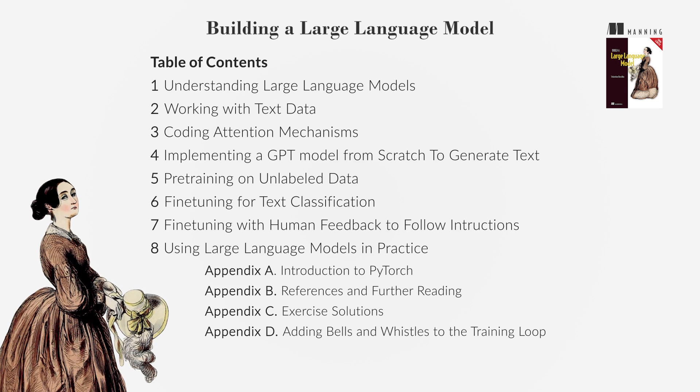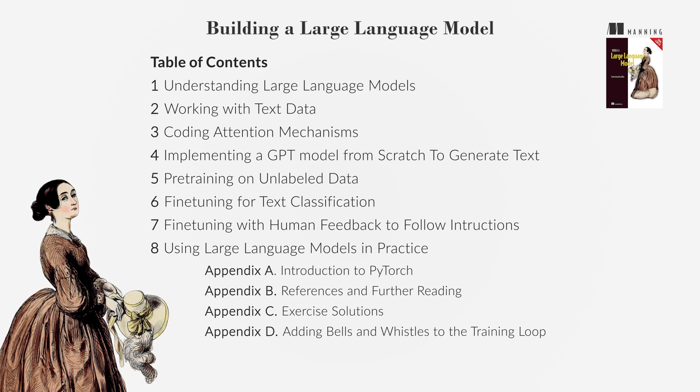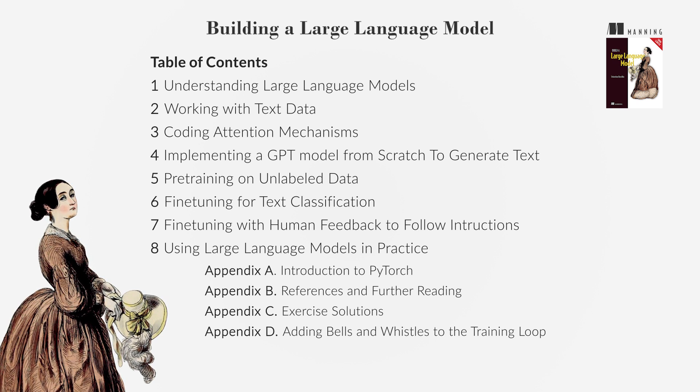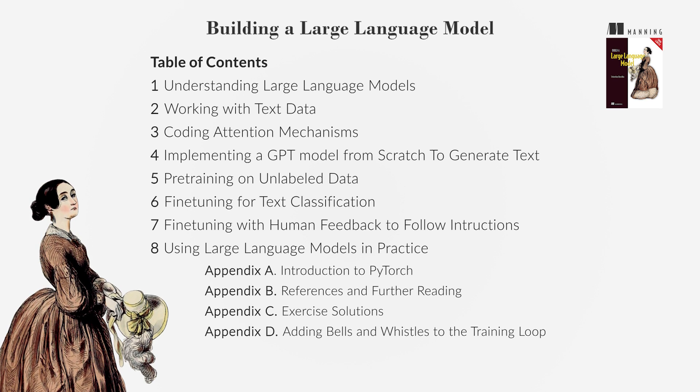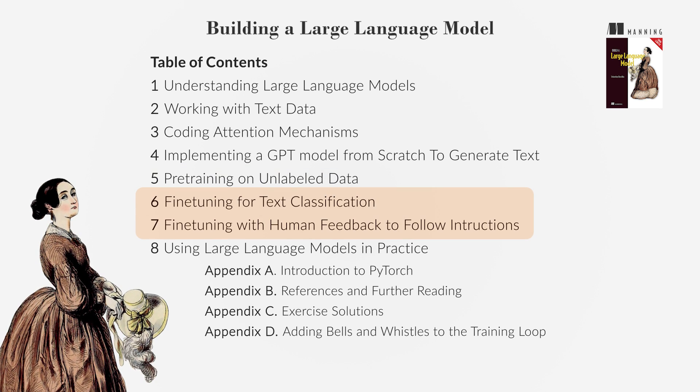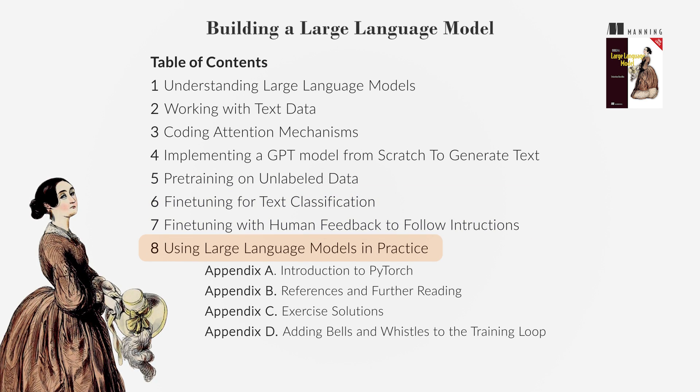In summary, LLMs are transforming NLP with their ability to process and generate human-like text. They are trained on extensive datasets and are capable of a wide range of tasks, from translation to content creation. Building and understanding LLMs involves pre-training and fine-tuning. The book will provide a practical approach to creating and using LLMs.